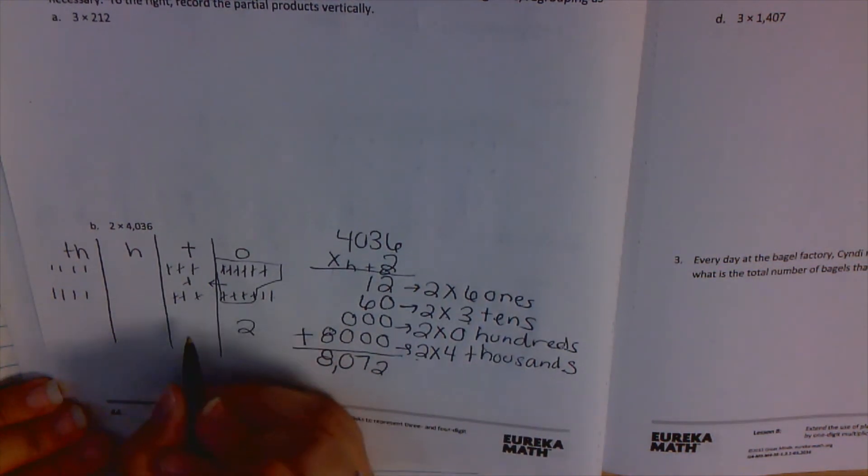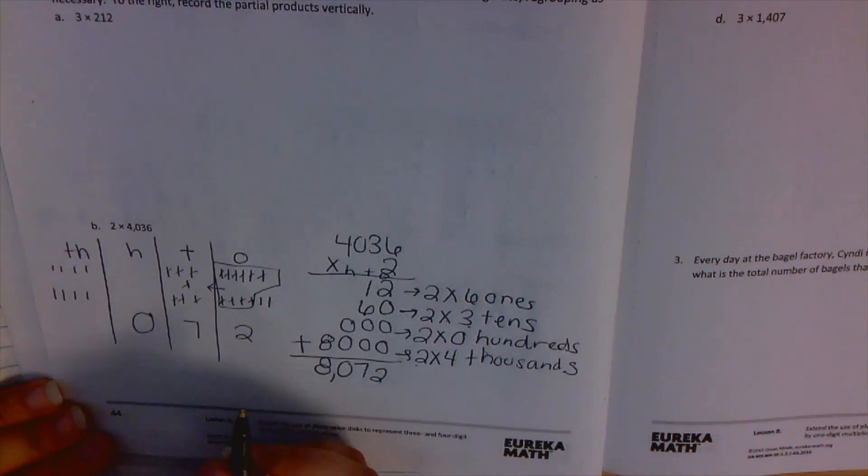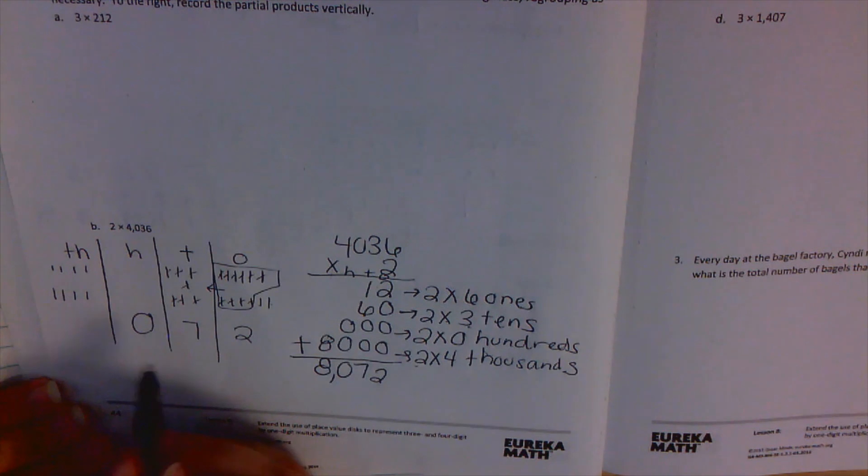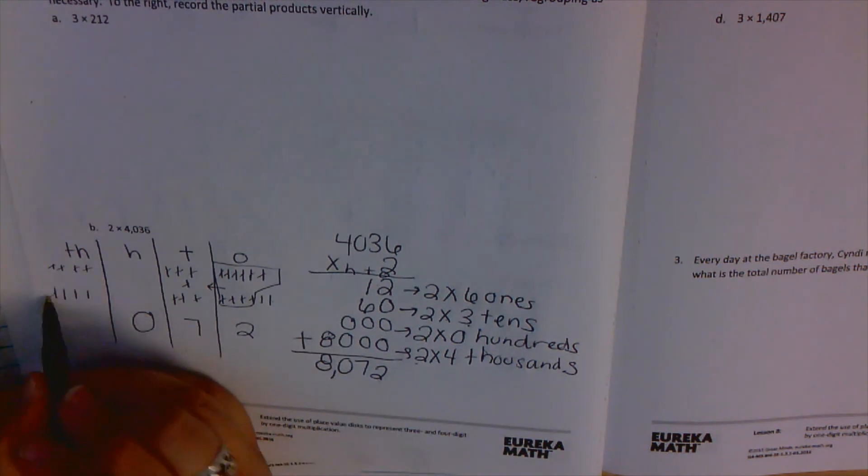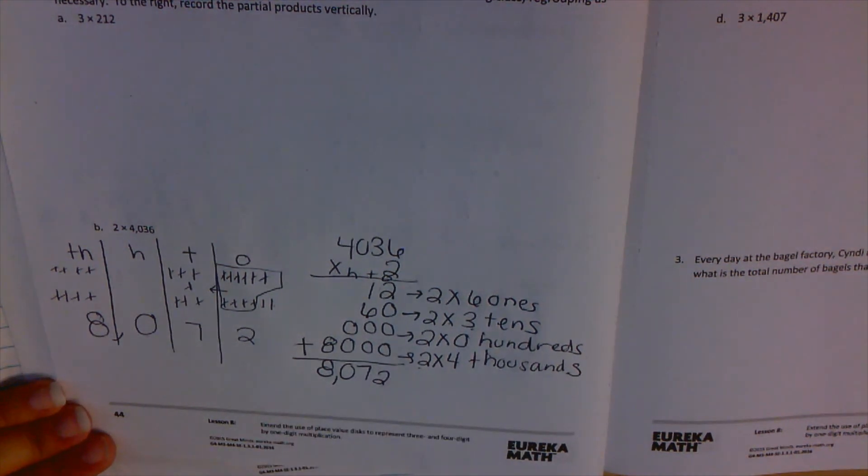1, 2, 3, 4, 5, 6, 7 in the tens place. We still have nothing in our hundreds. We have 0 groups of one hundred. 1, 2, 3, 4, 5, 6, 7, 8: 8,000. We have 8,072.